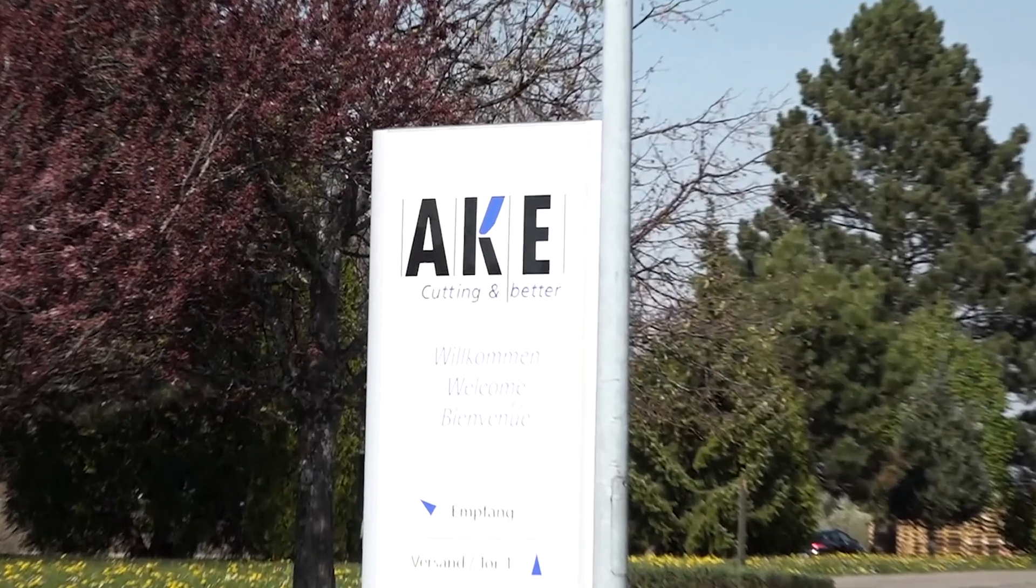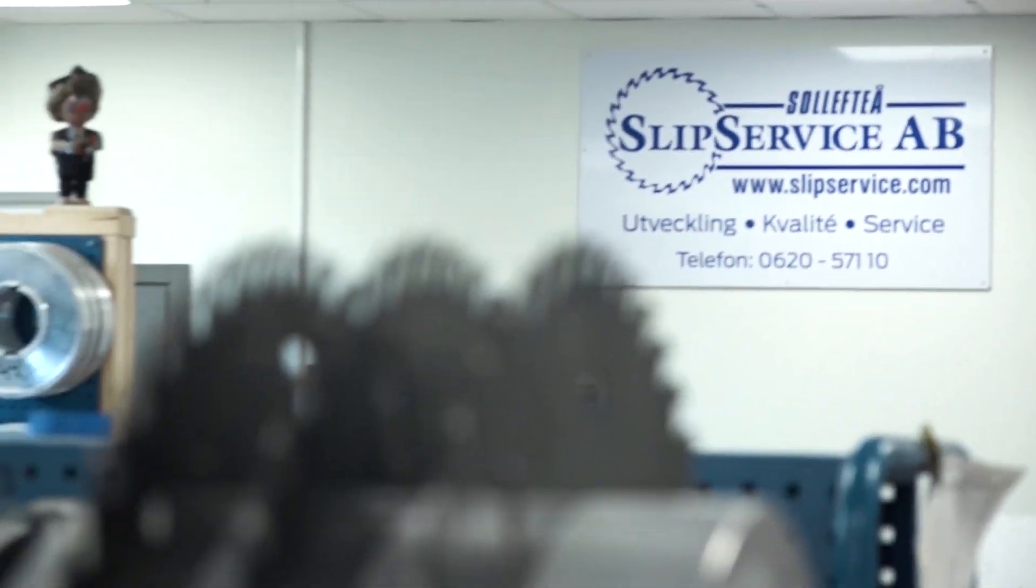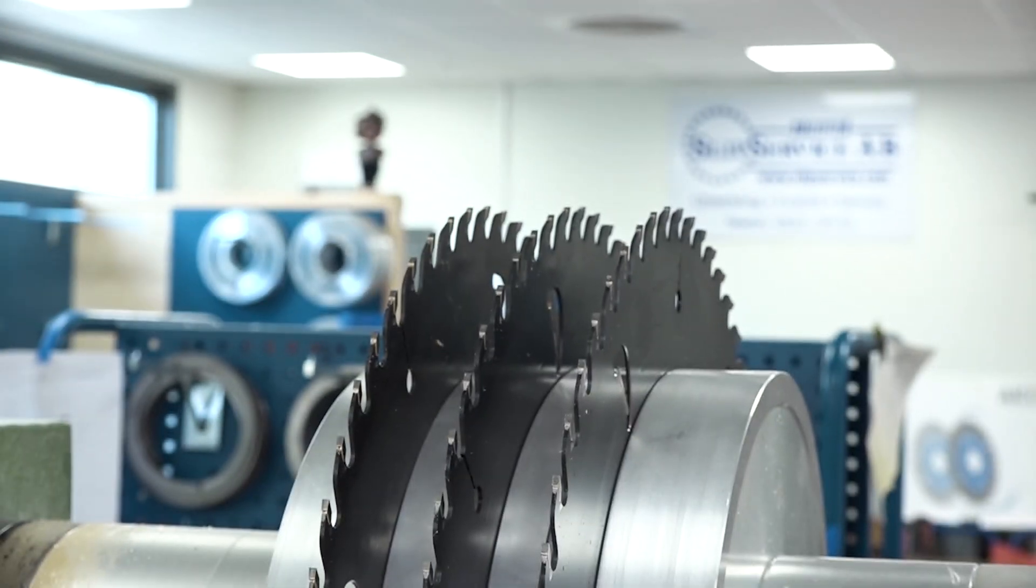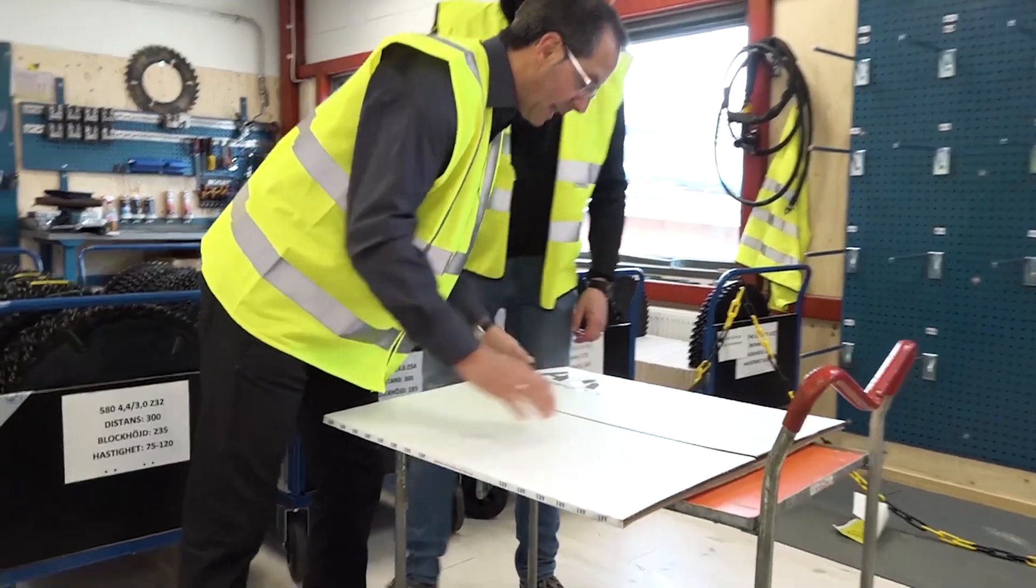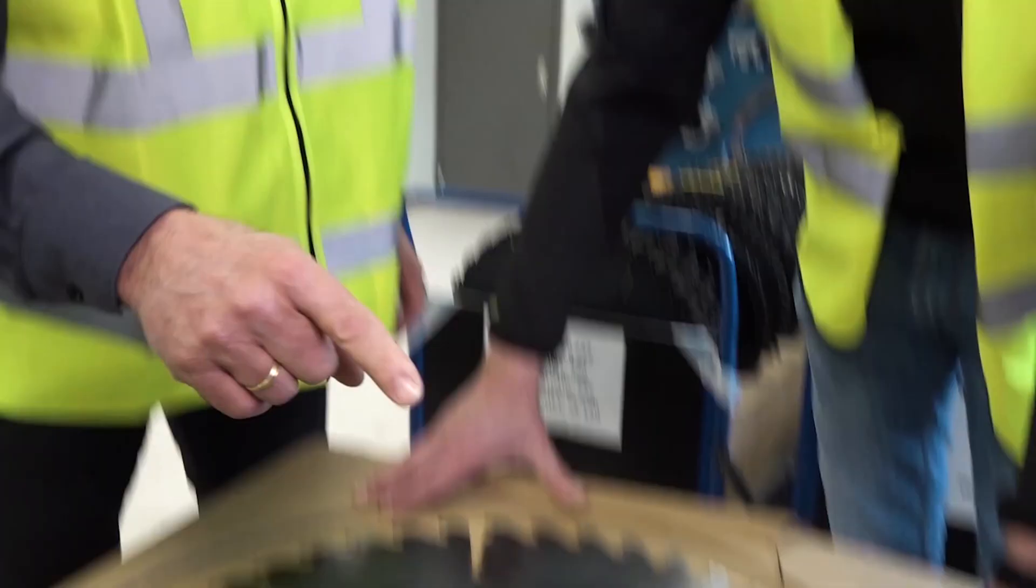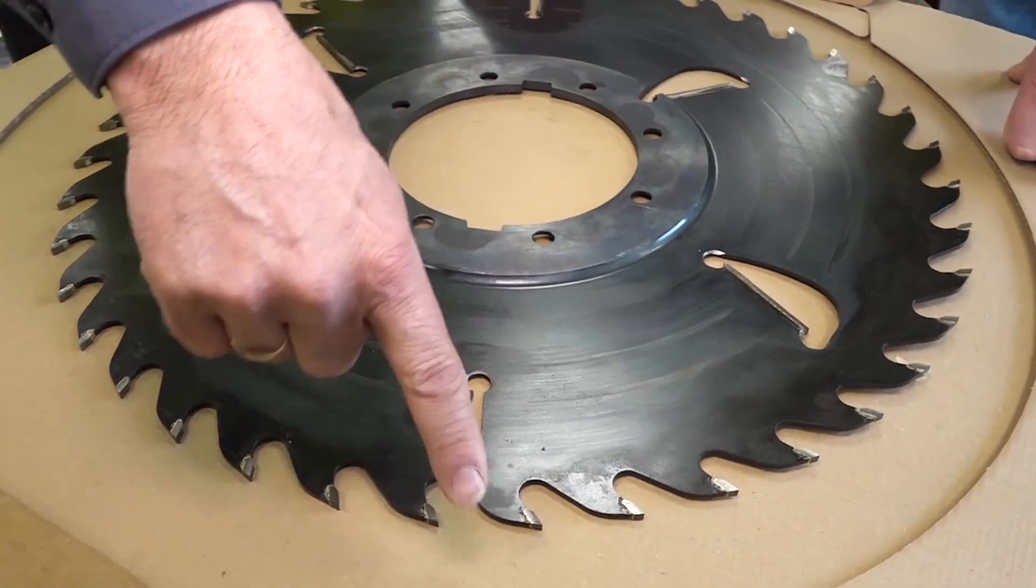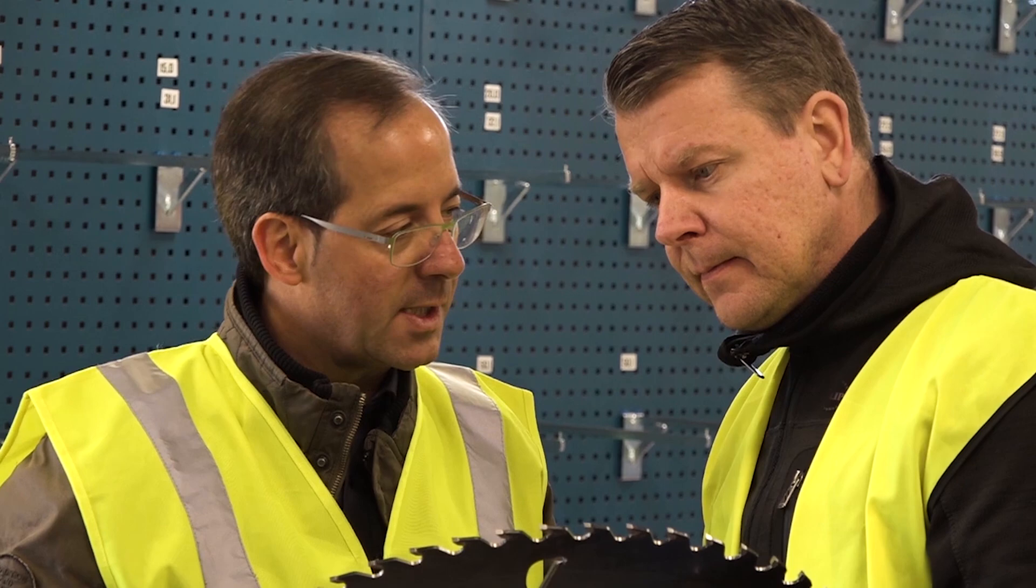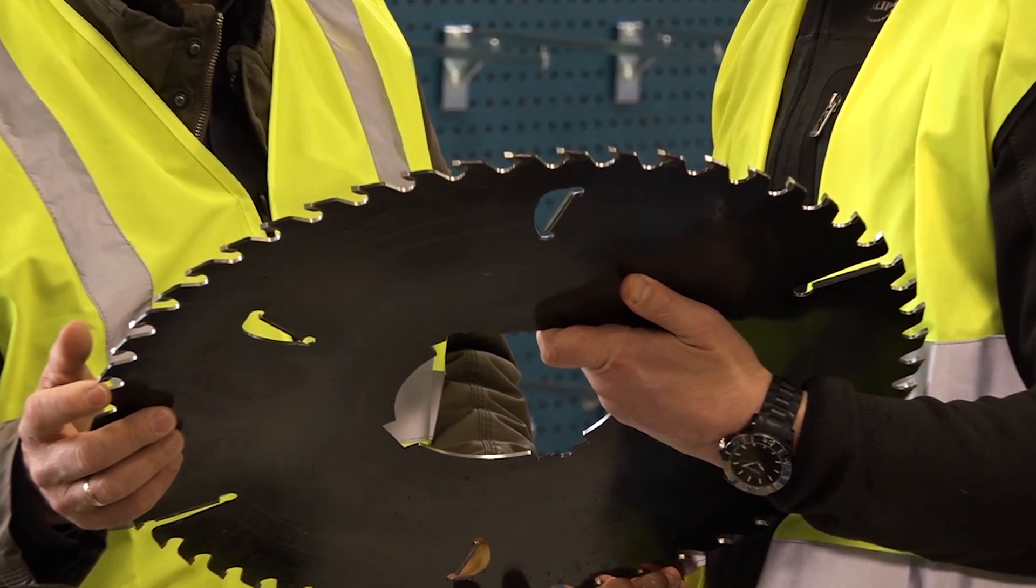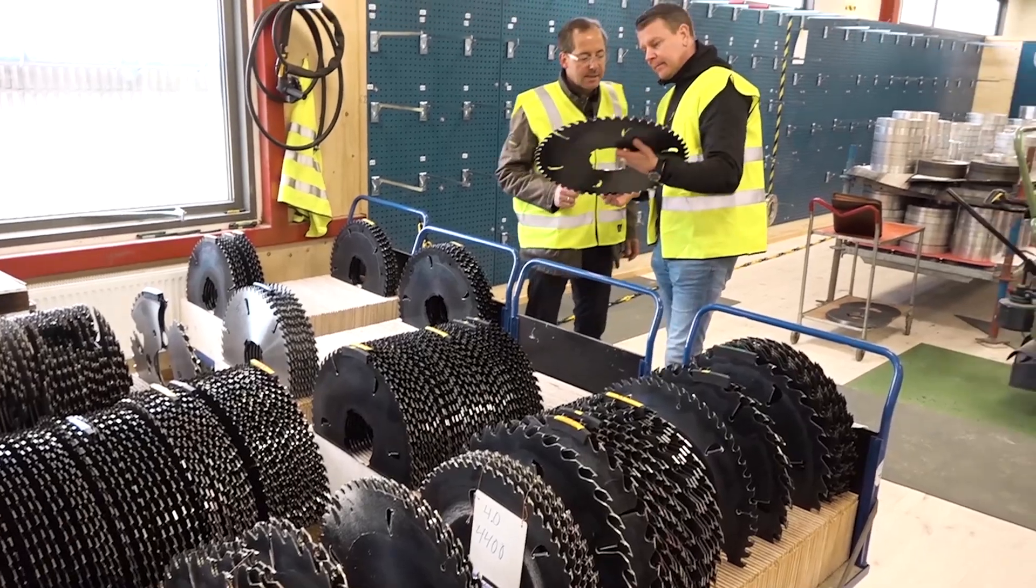In Sweden, the circular saw blade is already awaited by the customer and the AKE application engineer. Now the last details for the application have to be discussed before assembly. Depending on the diameter of the tree trunks to be processed, different tools are used. The system and the circular saw blades must therefore be optimally matched to each other in order to be able to produce constant board dimensions in the end.